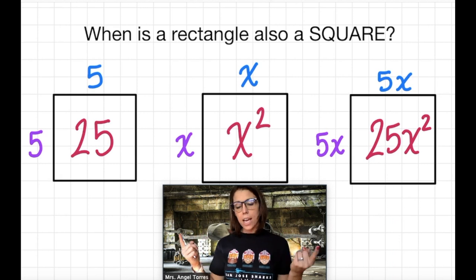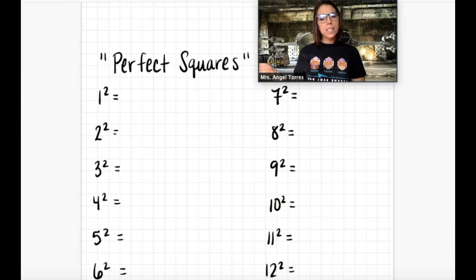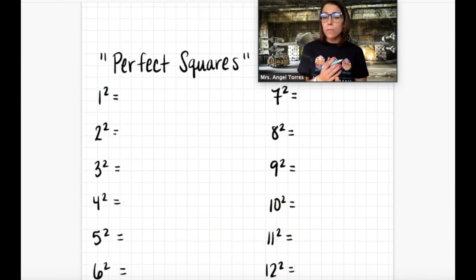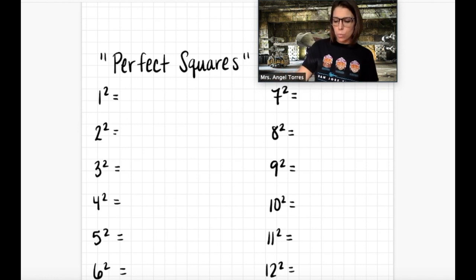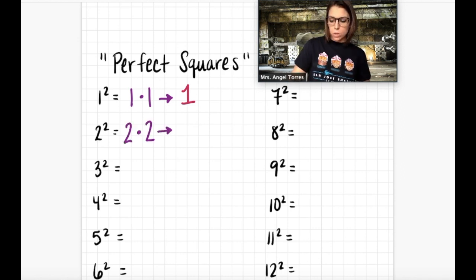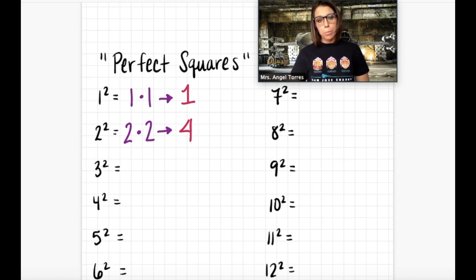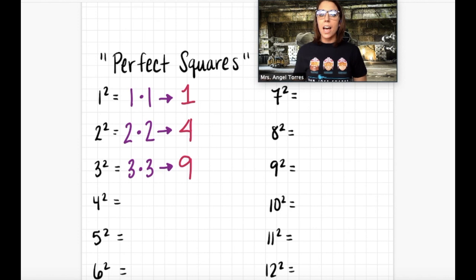You'll notice that the area of each of these squares is what we would call a perfect square. So what does this phrase perfect square actually mean? A perfect square is a number that is the result of squaring another number. For example, 1 squared is 1 times 1, which results in 1, so 1 is a perfect square. 2 squared is 2 times 2, which is 4, meaning 4 is also a perfect square. 3 squared is 3 times 3, which is 9, making 9 another perfect square.